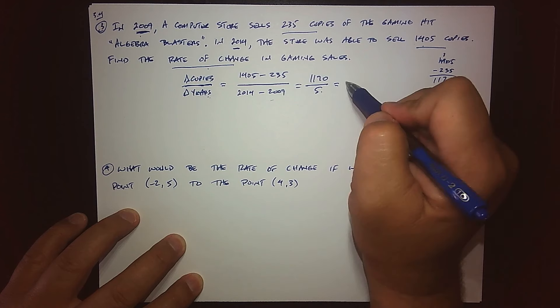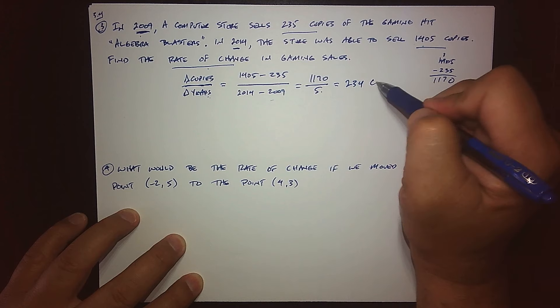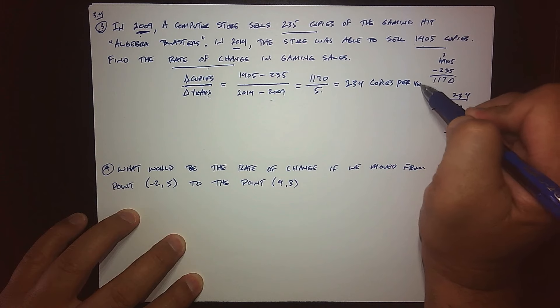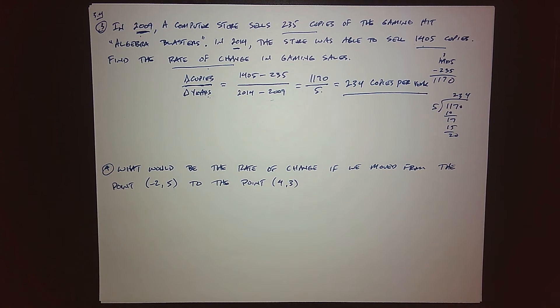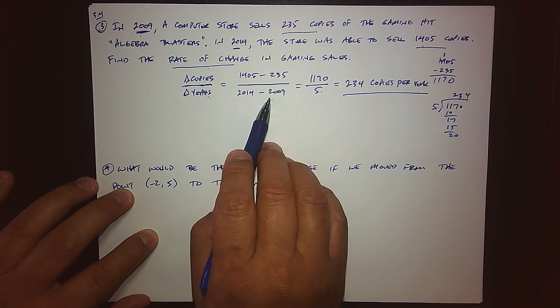So basically, over a five-year period, there were 1,170 change in copies. So what does that come out to? Well, we'll do the long division and we'll figure it out. So five goes into 11 two times, five goes into 17 three times, and then five goes into 20 four times. So it looks like 234. 234 what? Copies per year.